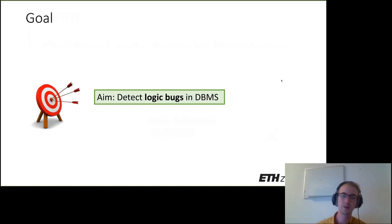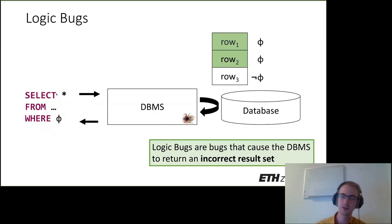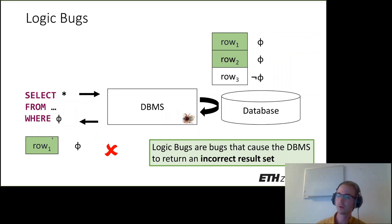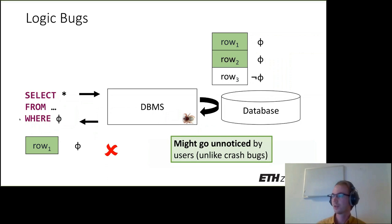In our work, we've been focusing on finding logic bugs, which immediately poses the first question: what are logic bugs? Let's assume we have some query that we send to a database management system. Here I've used the phi symbol to denote a boolean predicate. Let's assume we have a database with two records — for both, the predicate evaluates to true. We would expect both rows to be fetched, but in the case of a logic bug, only one might be fetched. Another example might be that a row is mistakenly fetched or that the contents of the result set are incorrect.